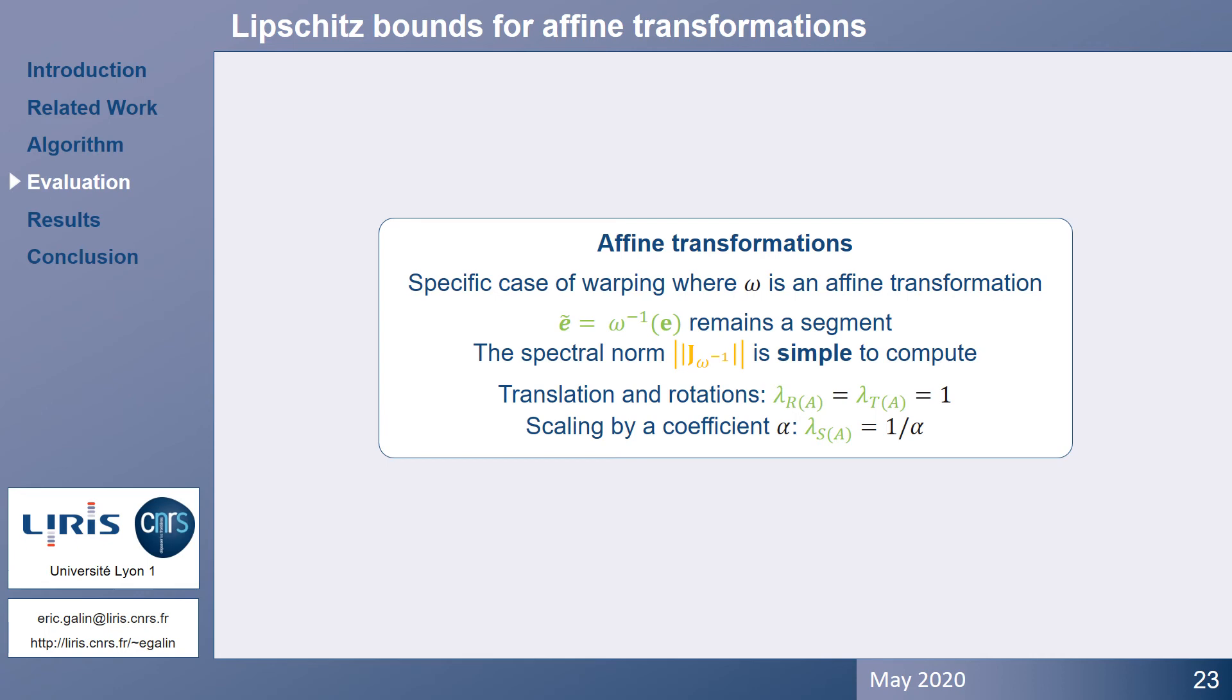Affine transformations are a special and simple case of warping. The transformation of a segment remains a segment, so the gradient of the child field function is also evaluated over a segment, and the spectral norm is simple to compute. The results are as follows, the Lipschitz coefficient applied to the subtree is 1 for rotations and translation, and the inverse of the scaling coefficient for scaling.